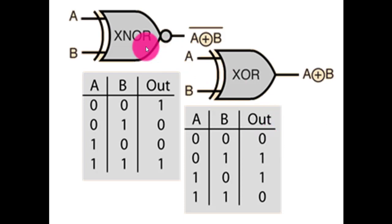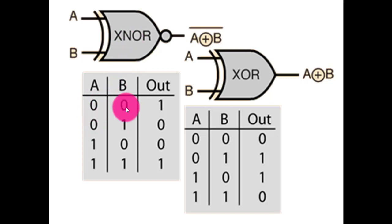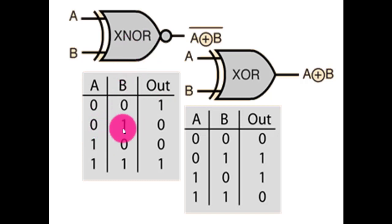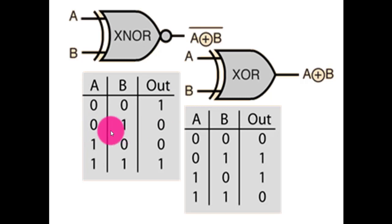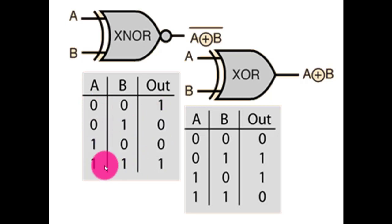In this diagram, you can see the symbols of the exclusive NOR and exclusive OR gate with their truth tables. When the inputs of exclusive NOR gates are same, the output is high. And when the inputs are different, the output is zero. So at zero-zero the output is one, zero-one is zero, one-zero is zero, and at one-one the output is one.